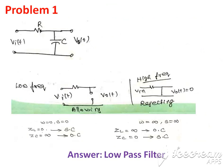First problem: we need to identify the filter circuit. The same problem was discussed previously using the conventional method. Here, by the shortcut method, when omega equals zero (s = 0), the inductor is a short circuit and the capacitor is an open circuit. With the capacitor open-circuited, the input is allowed to reach the output — this is allowed. Now for higher frequency: